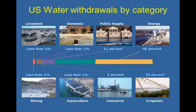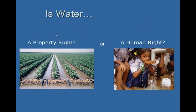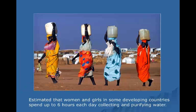In the U.S. and other industrialized nations, most of our water withdrawals are for energy, agriculture, and public water supply. Clean water is fundamental to human health. According to the United Nations, the human right to water is a prerequisite to the realization of all other human rights. This brings up the question of whether water is a property right or a human right — in the U.S., you'd have to argue it's both. It's been estimated that women in developing countries spend an average of six hours per day collecting and purifying water.